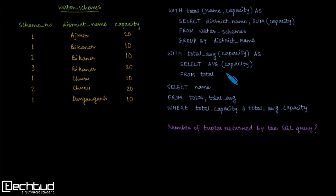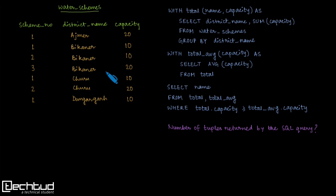Hello everyone, welcome to TechTid. In this video we'll be solving an SQL query that came in the GATE 2016 CS paper. We have a relational schema named 'water schemes' with three attributes and a set of data values — an instance of the relational schema. An SQL query is given, and the question asks us to find the number of tuples returned by this SQL query when run on the given data instance.